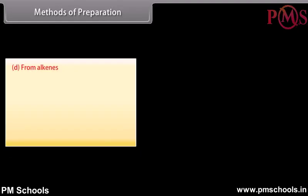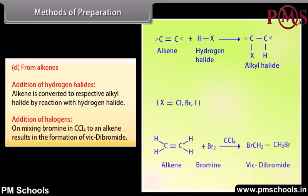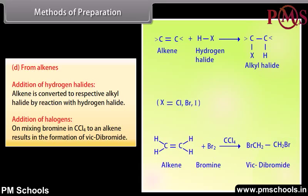From alkenes: addition of hydrogen halides — an alkene is converted to alkyl halide by a reaction with hydrogen halide. Addition of halogens — on mixing bromine in CCl4 with an alkene, it results in the formation of vic-dibromide.